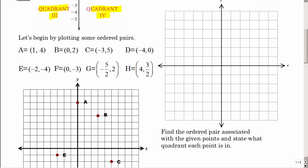Let's start with the basics on how to plot some ordered pairs. You're given an ordered pair — order matters. The first number is the X coordinate and the second number is the Y coordinate. We go along the X axis side to side, then up and down. From the origin we go over one and then up one, two, three, four — that's our point, we'll label it A.